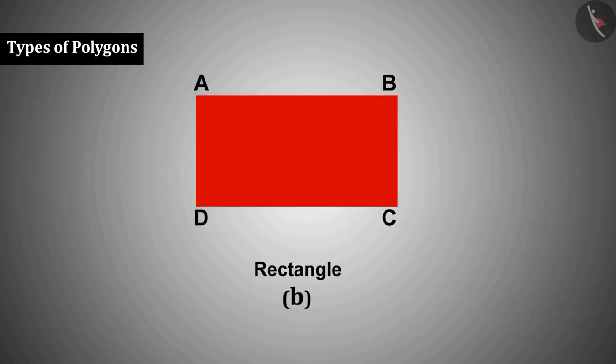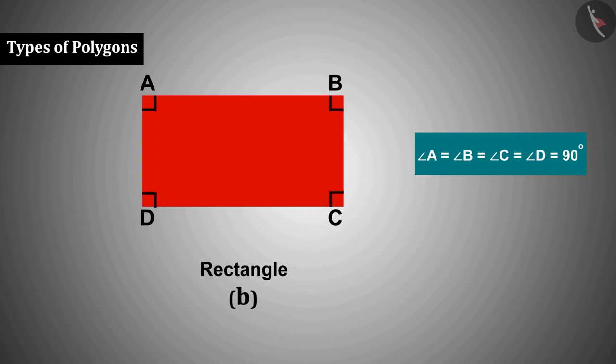Polygon B is a rectangle in which all the angles are equal to the right angle but the sides are not equal, therefore it is an irregular polygon.